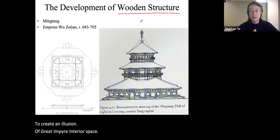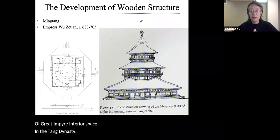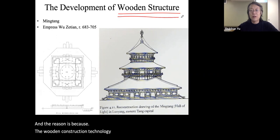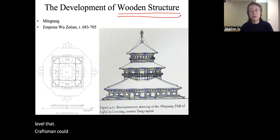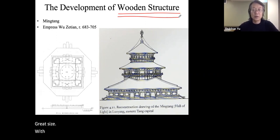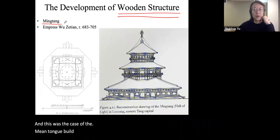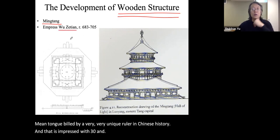In the Tang dynasty that was no longer the case. Wooden construction technology had advanced to a level where craftsmen could construct great size with pure wooden construction alone. This was demonstrated by the Ming Tang built by a very unique ruler in Chinese history—Empress Wu Zetian.